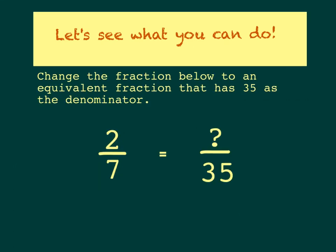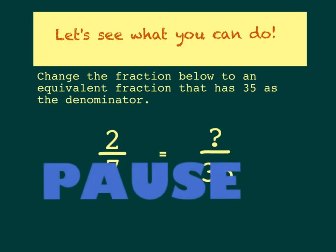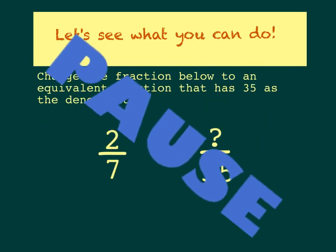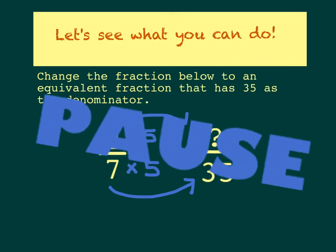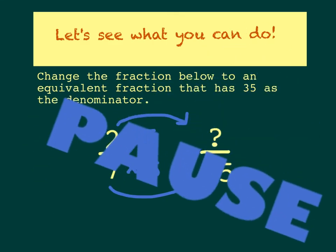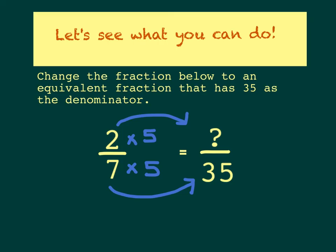Now for your last challenge, you're going to change the fraction 2 sevenths to an equivalent fraction that has 35 as the denominator. Pause the video while you do the math, then unpause when you're ready to see the answer. When I multiply 7 by 5 to get to 35, I have to do the same thing to my numerator, which gives me a new numerator of 10 — giving me a new equivalent fraction of 10 thirty-fifths.